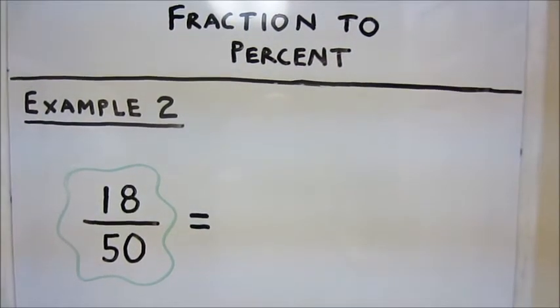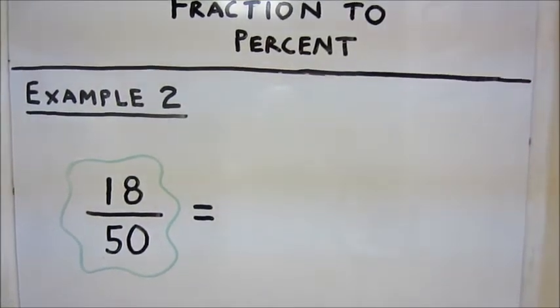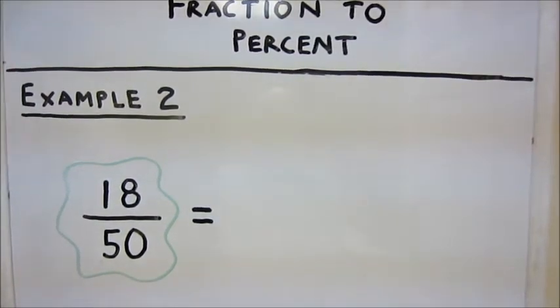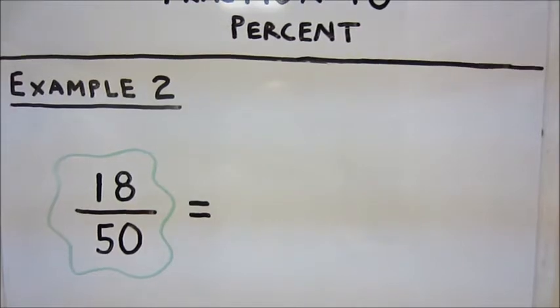Now since our denominator is not 100, we have a denominator 50 that is a factor of 100. So what we're going to do is make an equivalent fraction with 100 as our denominator.